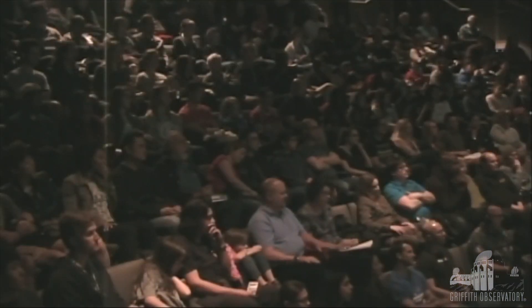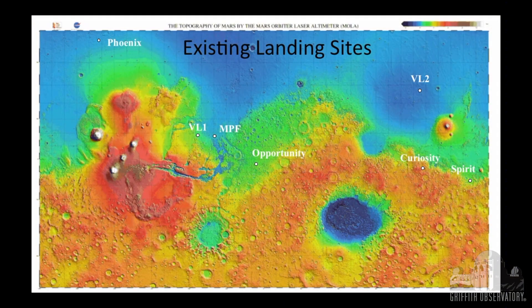So where are all the landers? In the lowlands. Why? More atmosphere. The atmosphere on Mars is about one percent that of Earth, and we've used parachutes to slow the spacecraft down — the lower in elevation you go, the thicker the atmosphere gets and the more effective your parachute is. They also all tend to be near the equator — warmer, and more importantly, if you have a solar-powered spacecraft, you get more sunlight near the equator. The problem is that Mars didn't get the engineering memo about how to cooperate with landers — everything near the equator is too high, not enough atmosphere.